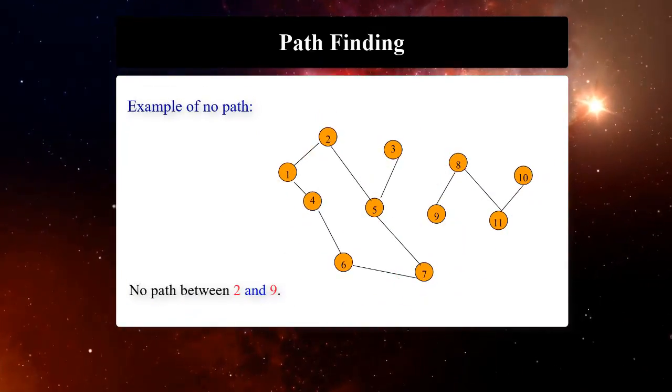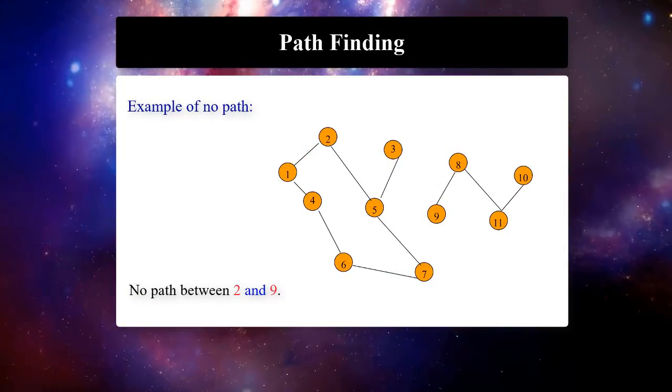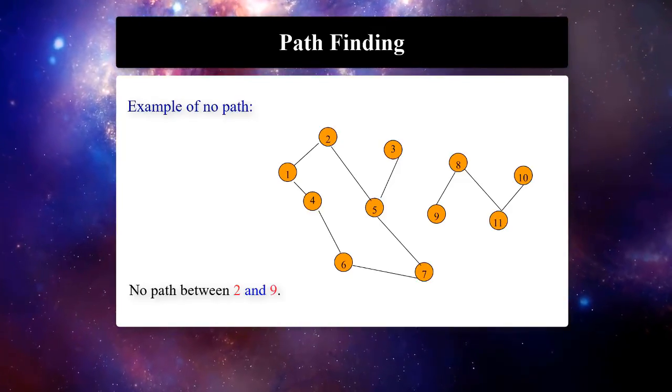We cannot always find a path between every two nodes of a graph. Consider this graph. There is no path from 2 to 9.